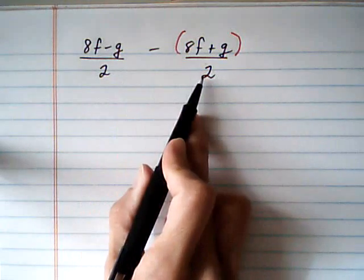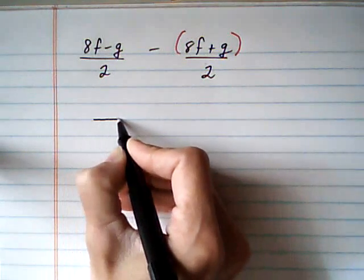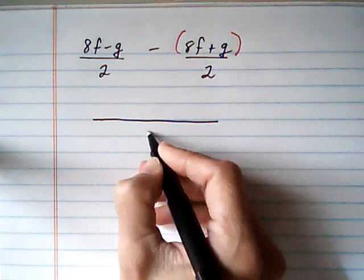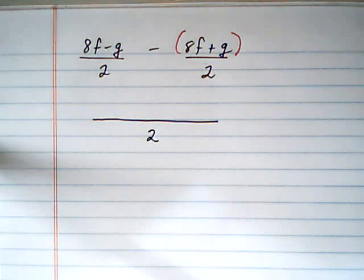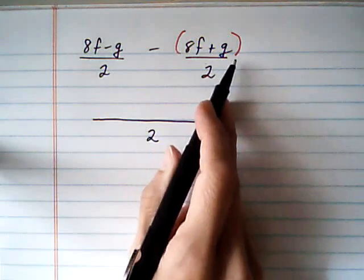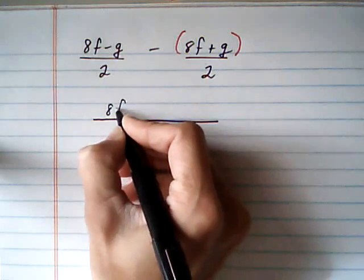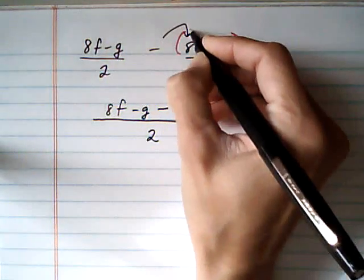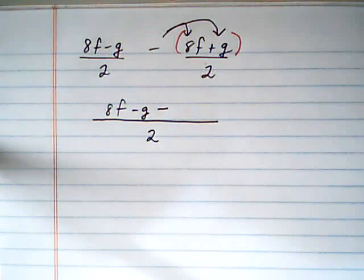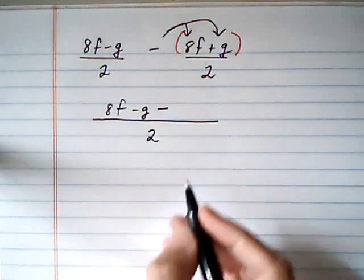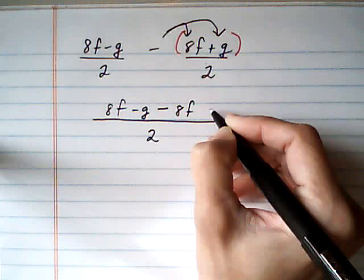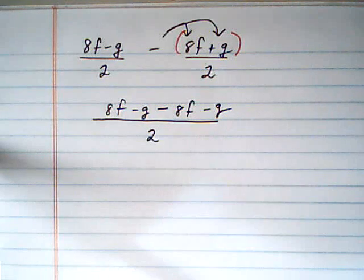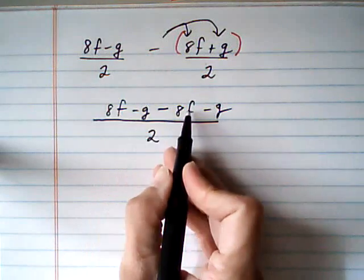Because this has the same denominators, we can go right to the step of writing one fraction with the common denominator. So we're going to go ahead and subtract the numerators: 8f take away g, take away — and that parentheses is really important here because it's telling us to distribute the minus sign — take away 8f, take away g, all over the common denominator of two.